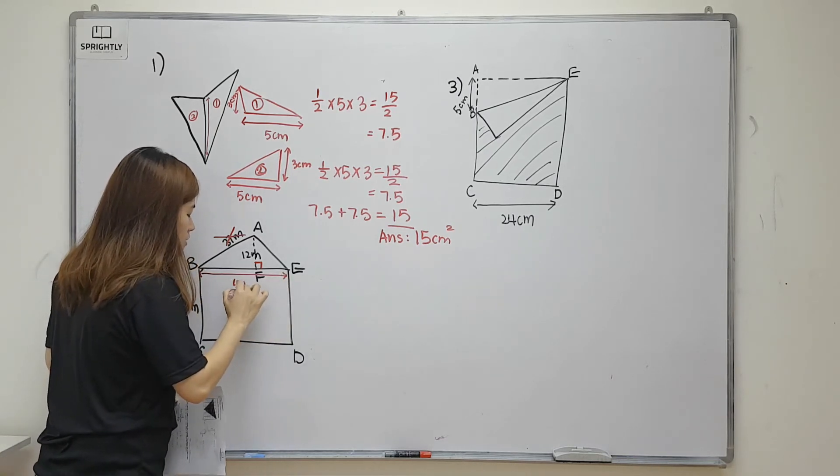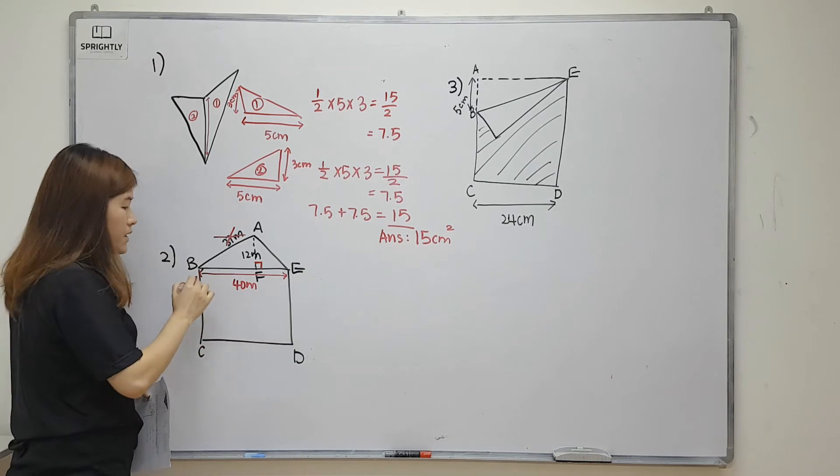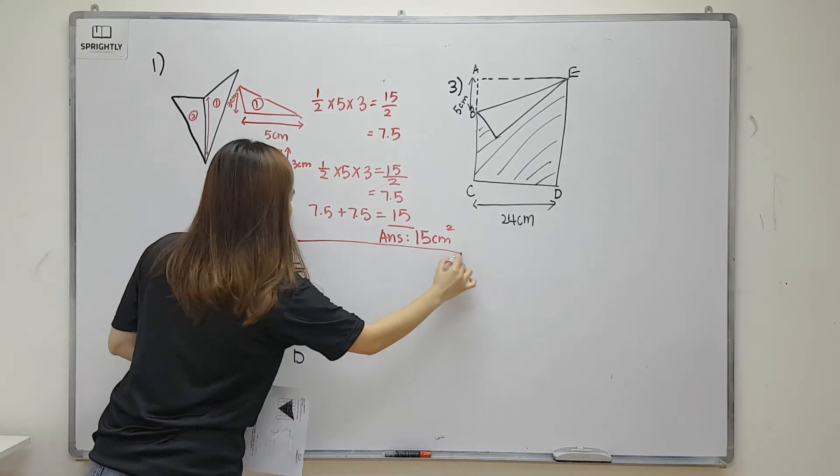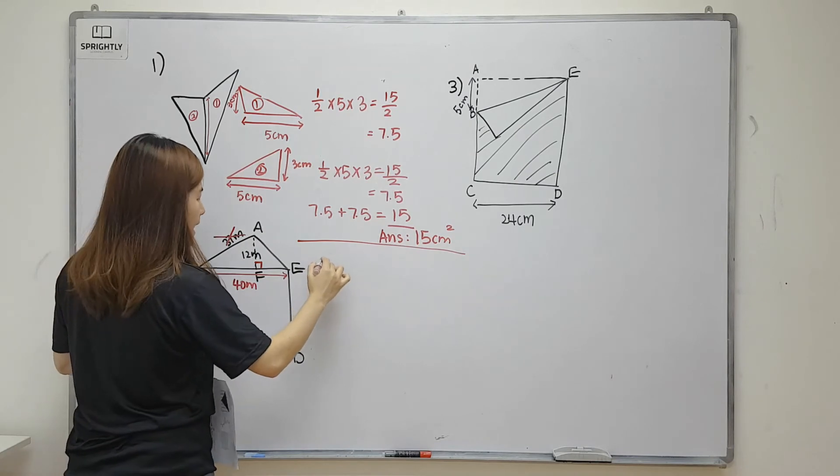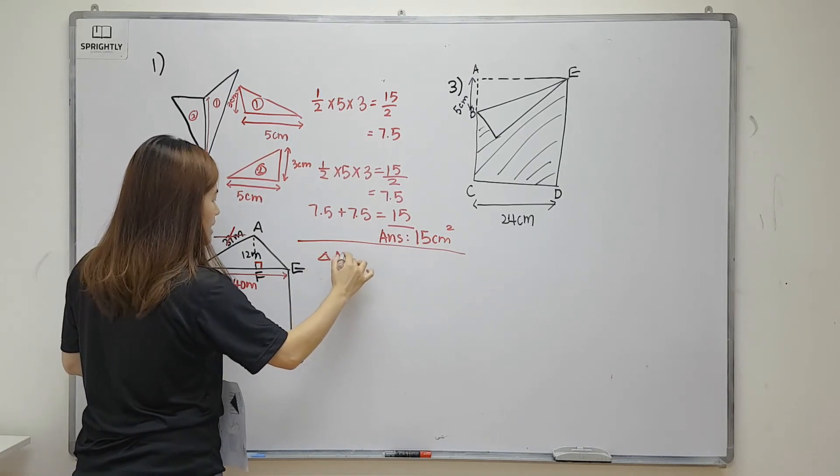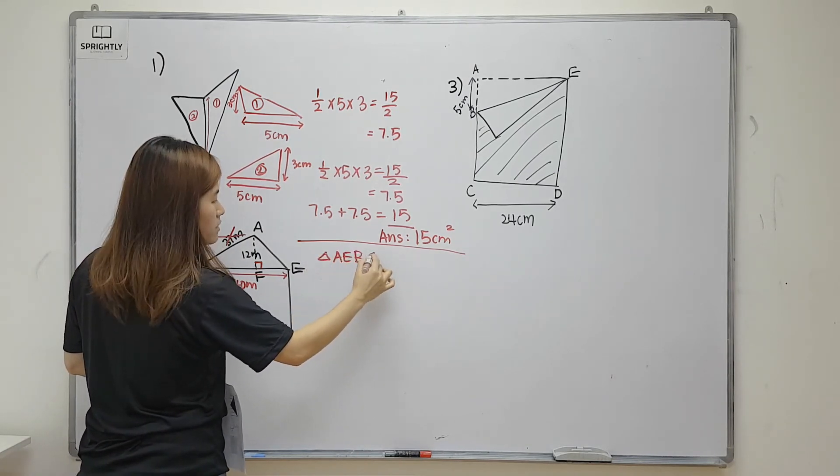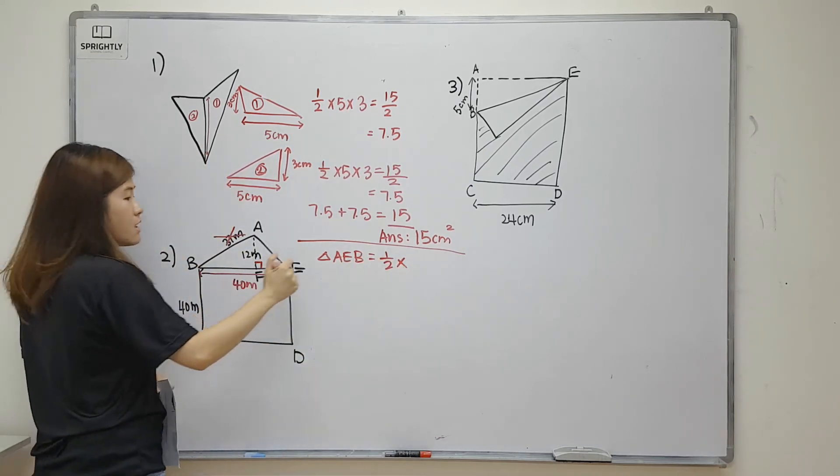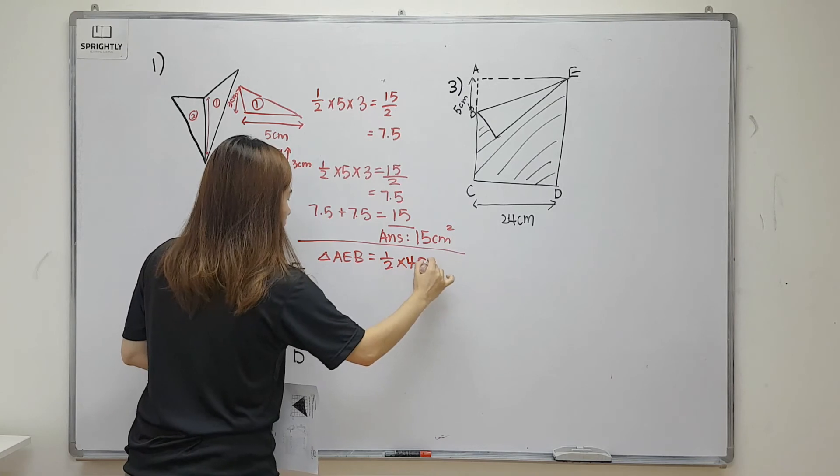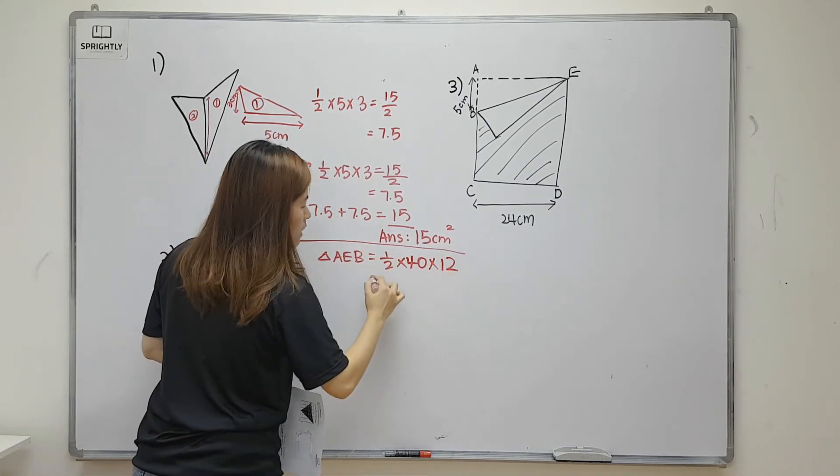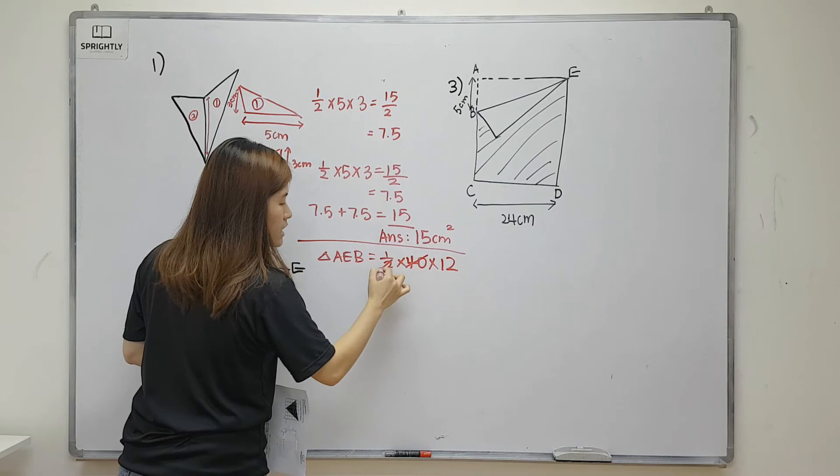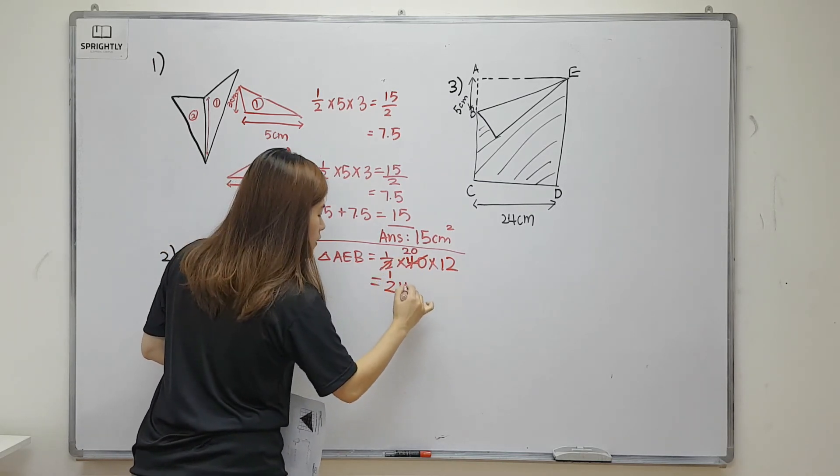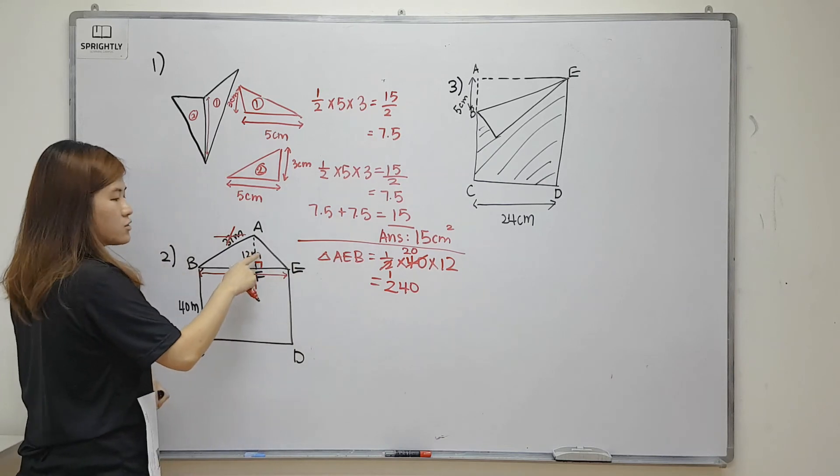How do I know this is 40? Because this is a square. The first part, in order to find triangle AED, it will be equal to half times the base which is 40 and multiply by the height which is 12. So I do my cancellation - cancel, cancel - you should be able to get 240 over here. Now I know that the triangle is 240. What about the square?